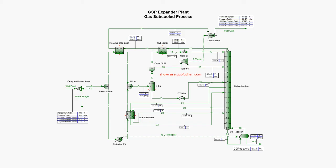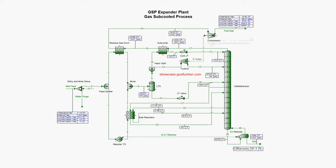From the top of the column, the residue gas is first used to subcool the reflux, then used to pre-cool the natural gas feed, and finally is compressed in the compressor to boost the fuel gas pressure.